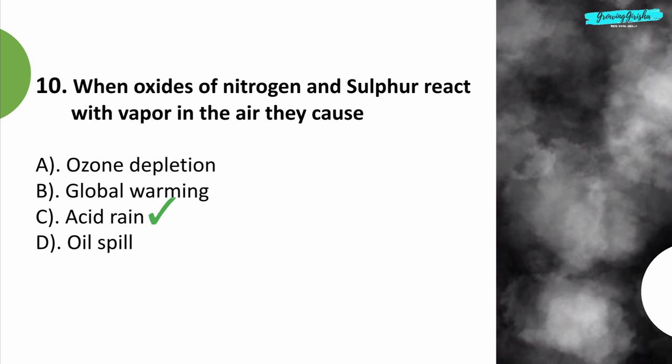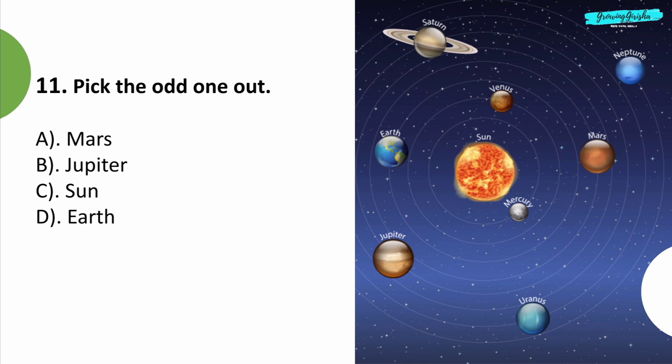Question 11: Pick the odd one out. Option C: Sun, because Mars, Jupiter and Earth are planets.